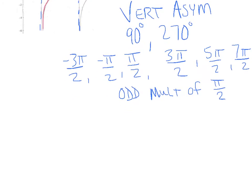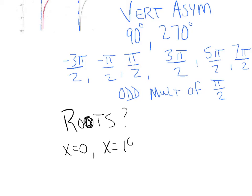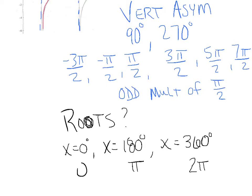The last important thing is identifying the roots — where the graph crosses the x-axis. We have a root at x = 0, a root at x = 180° (π radians), and a root at x = 360° (2π radians). Make sure you know where the vertical asymptotes are and where the roots are — that will go a long way toward getting your tangent graph right.